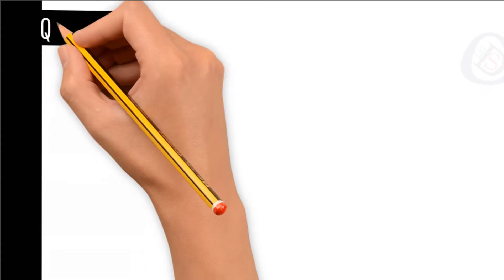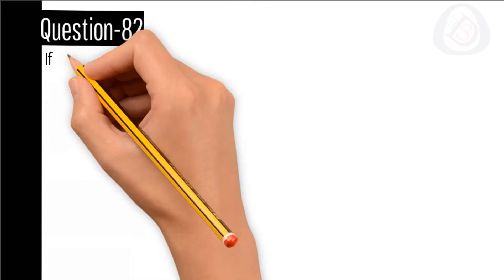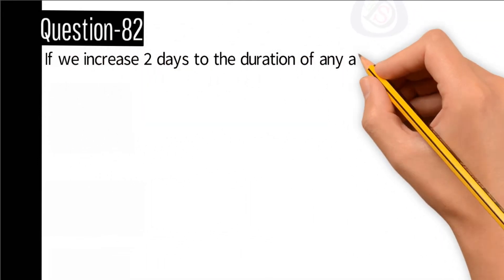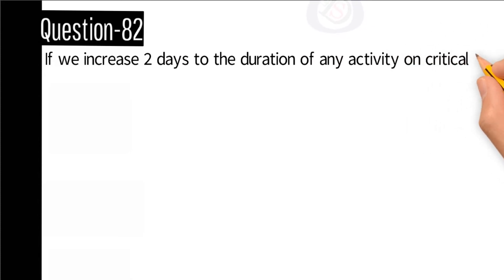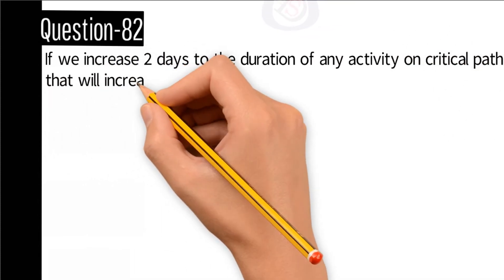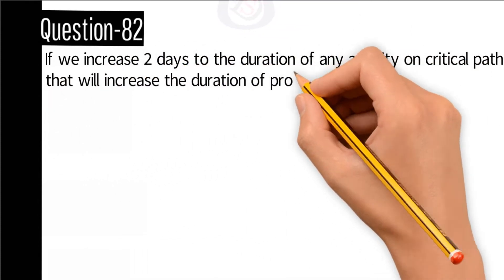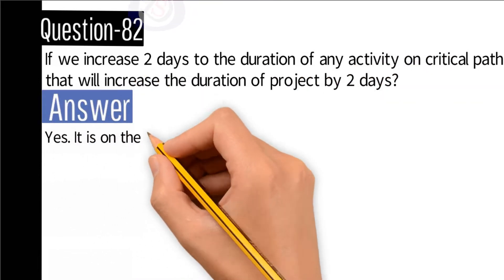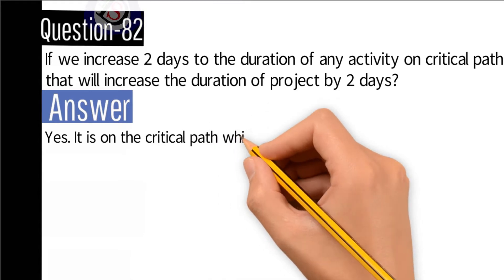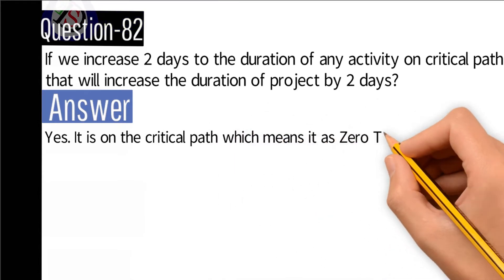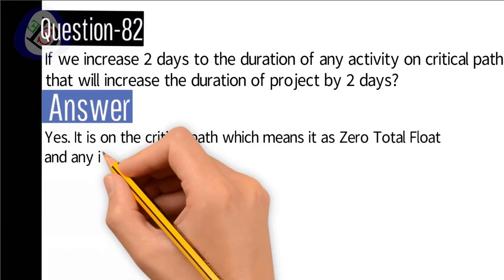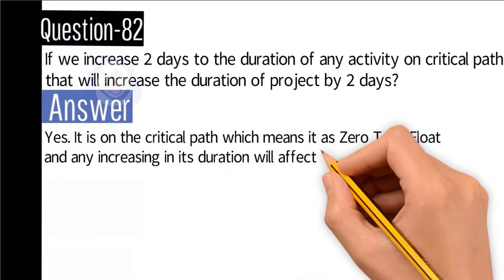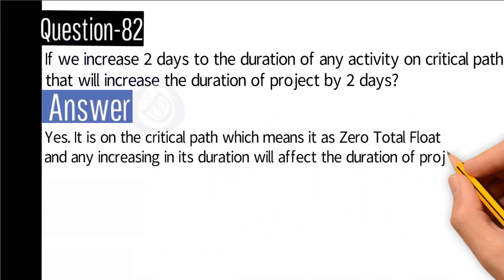Question number 82: If we increase two days to the duration of any activity on the critical path, will that increase the duration of the project by two days? Answer: Yes. It is on the critical path, which means it has zero total float, and any increase in its duration will affect the overall duration of the project.